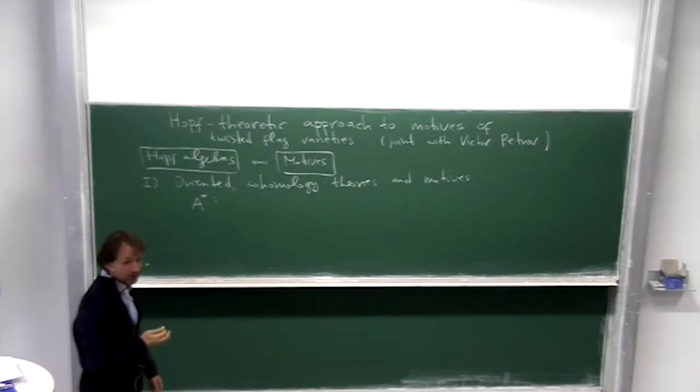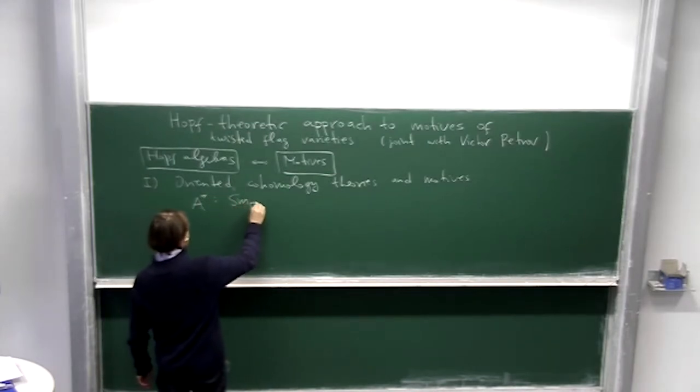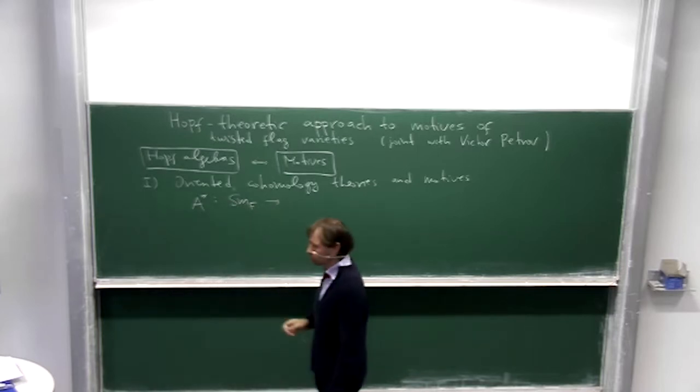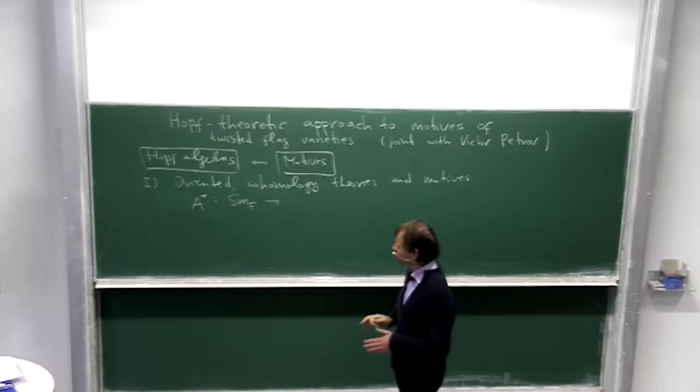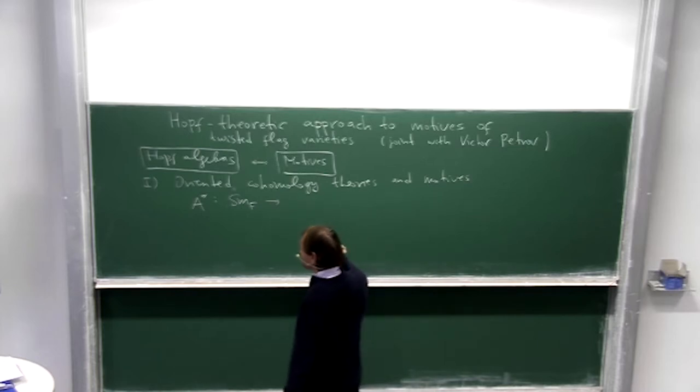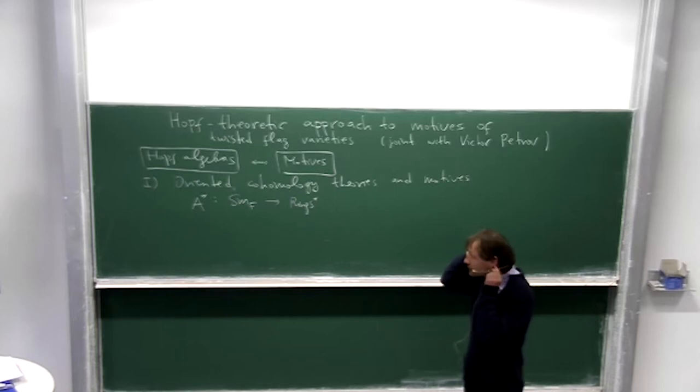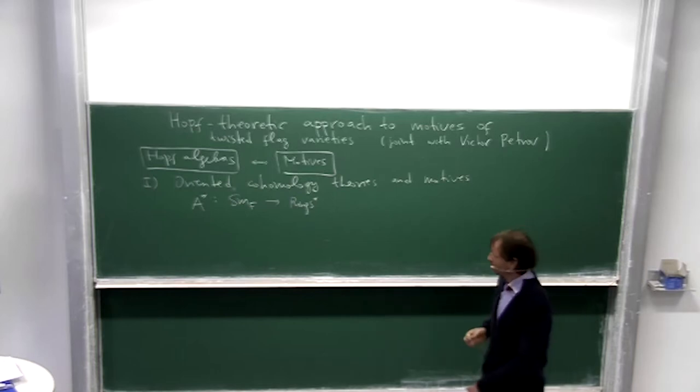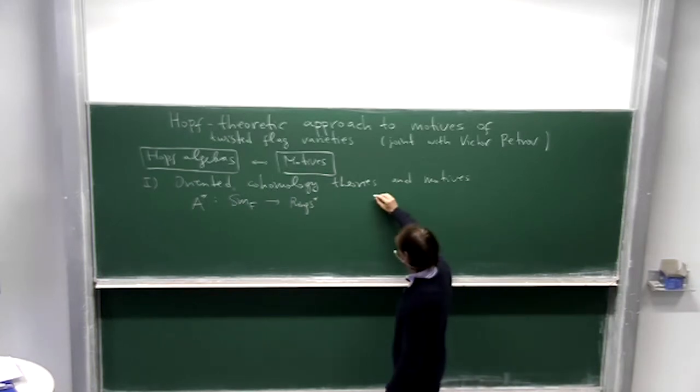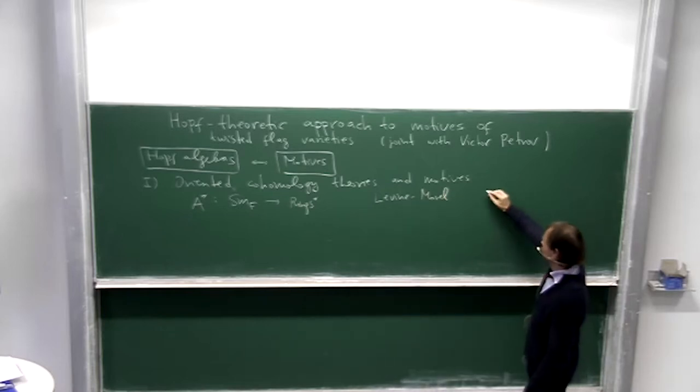Oriented homology theory is a functor from the category of smooth varieties over some field F to the category of commutative graded rings. Actually there are several approaches to orienting homology theories. I think the most famous ones are due to Levine and Morel.